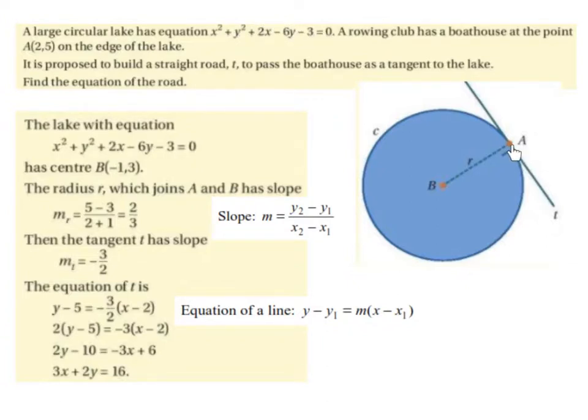And this point A, where the boathouse is, is the point (2,5). This is the edge of the lake. It is proposed to build a straight road, t, to pass the boathouse as a tangent to the lake.